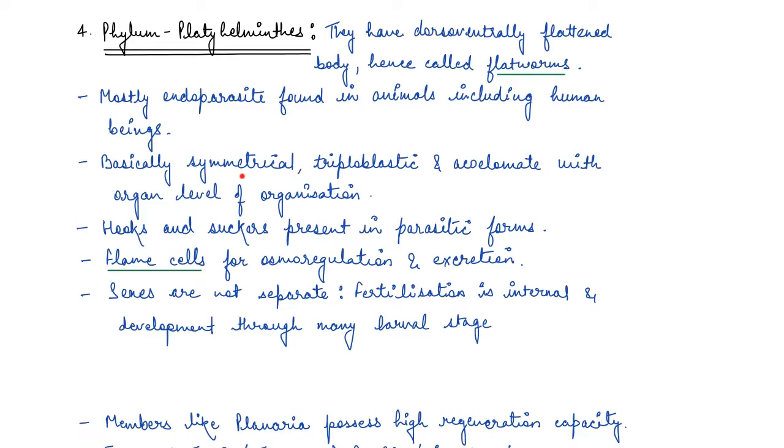Their body is symmetrical - they have bilateral symmetry. They have all three layers, so they are triploblastic. They have endoderm, ectoderm and mesoderm as well, and they are acoelomate - there's no body cavity present. The level of organization is organ level. Now we are moving towards a more diverse and complex form of organization. Previously we saw tissue level in Ctenophora, and in sponges they have cellular level. Now these have organ level of organization. They have hooks and suckers which is present in parasite forms and it helps in attachment to the body of the host.